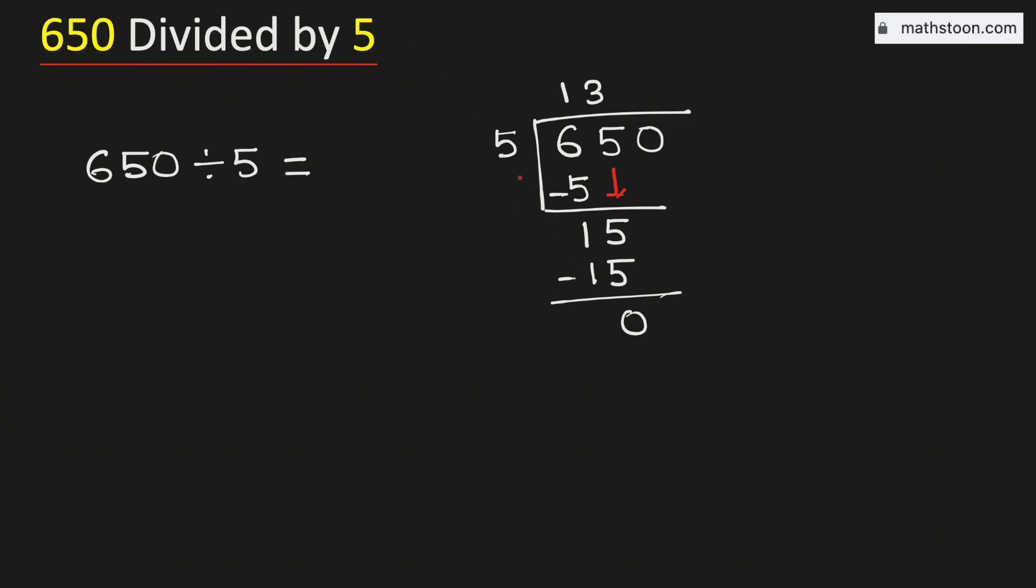As 0 is less than 5, we will bring down this number 0 here. But see that this is the number 0, so we will remove one 0.